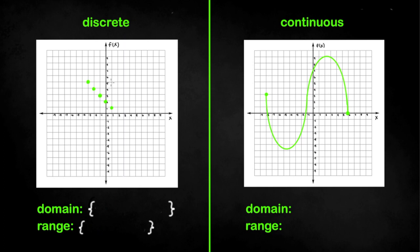For discrete graphs you must write the values of each point. For continuous graphs you must write an inequality representing all the points in the function. Range is controlled by the variable y while domain is controlled by the variable x.